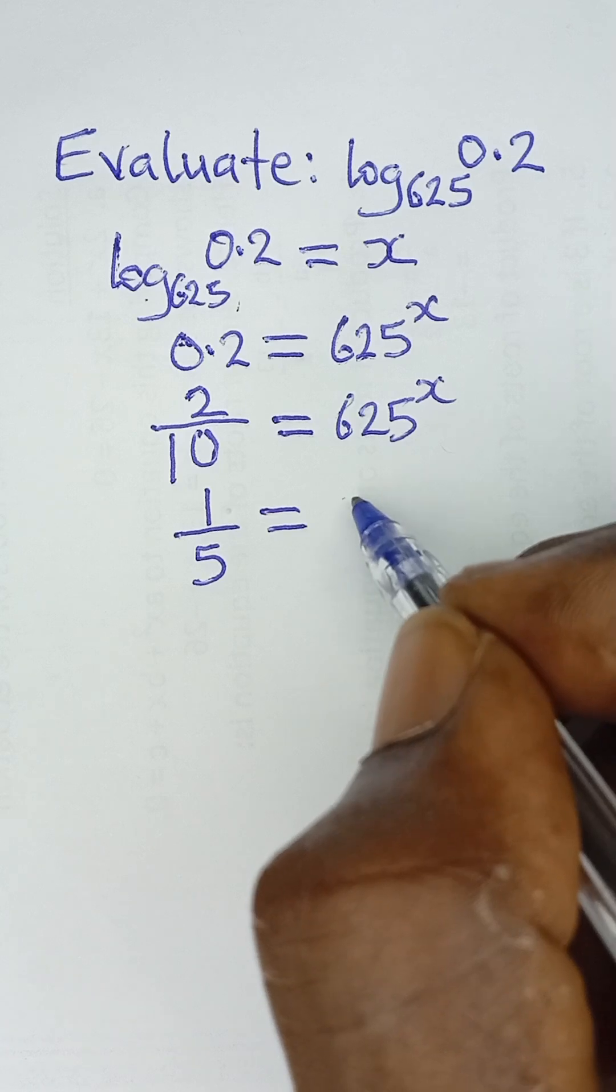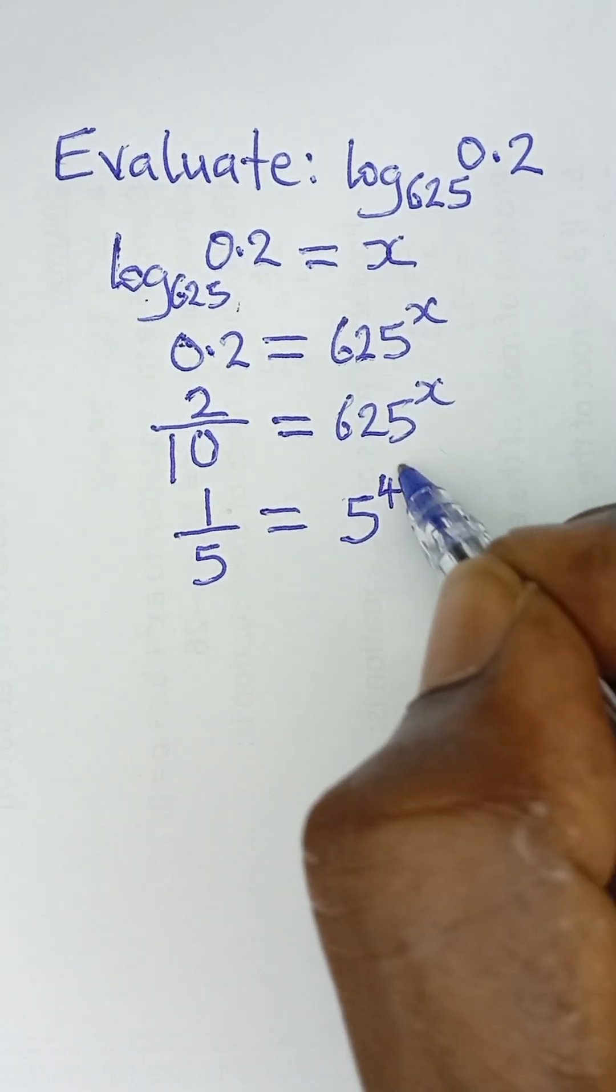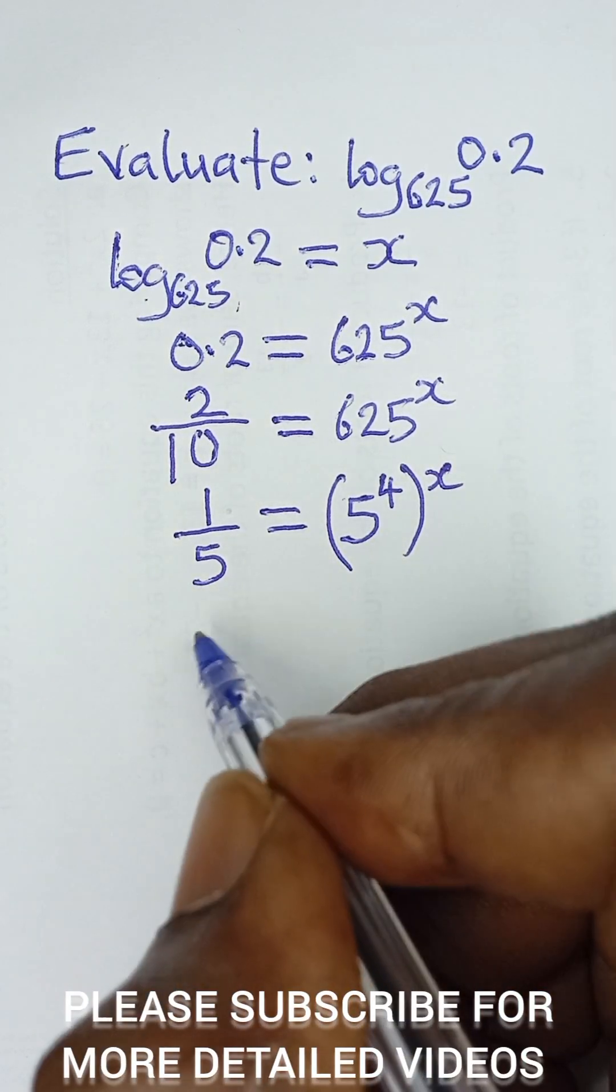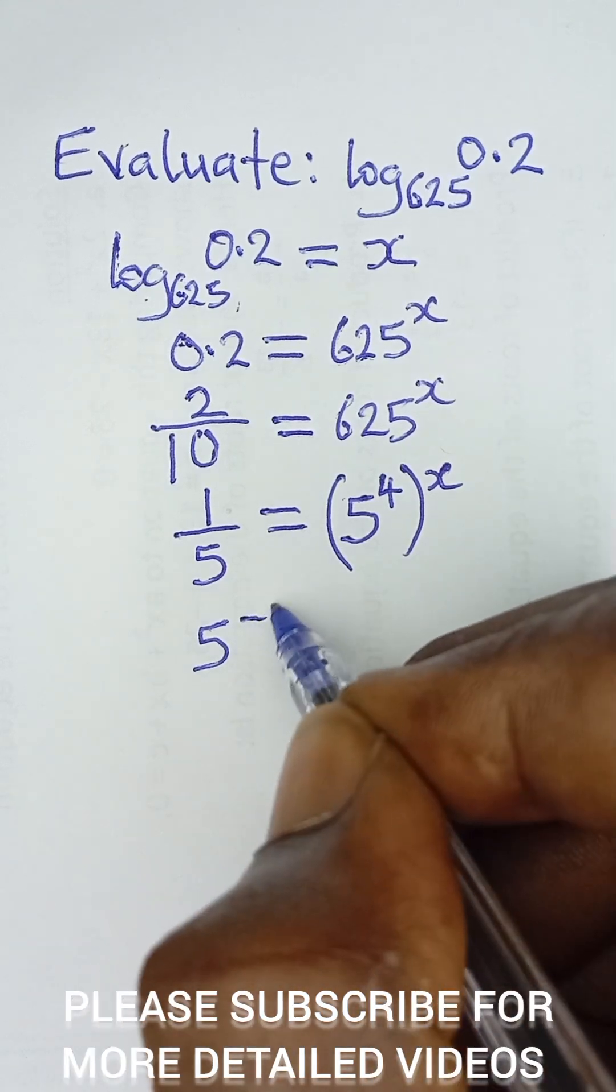625 is simply as 5 raised to power 4, so 5 raised to power 4 raised to power x outside. And then 1 over 5 can be expressed as 5 raised to power minus 1.